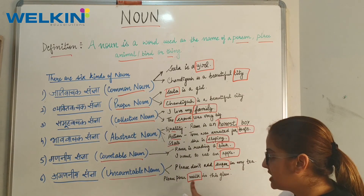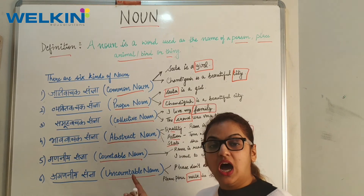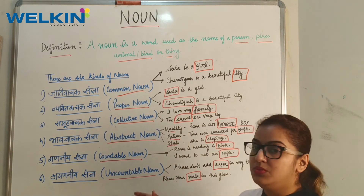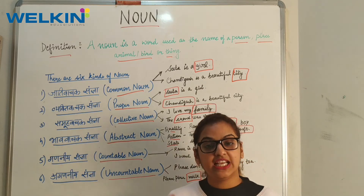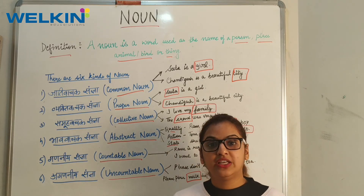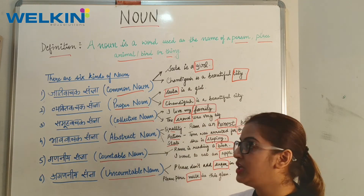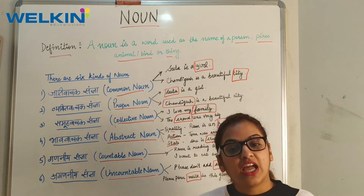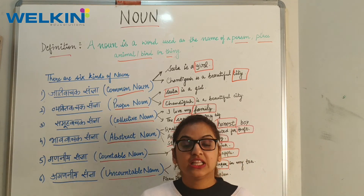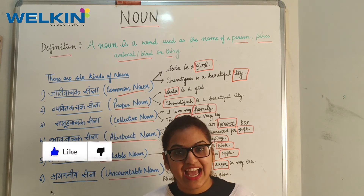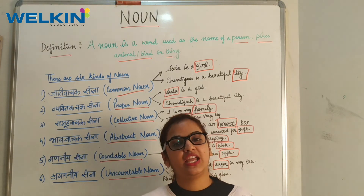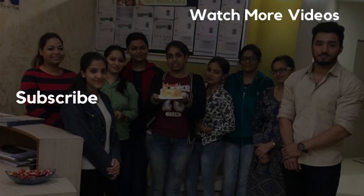So milk again is an uncountable noun. I hope the introduction of noun is clear to you. In the next lesson I will give you a complete explanation of each noun. Thank you for watching my video. Thumbs up if you like it, and please do comment if you have any doubt or any query. Thank you. Bye bye.